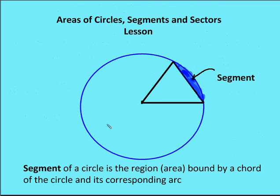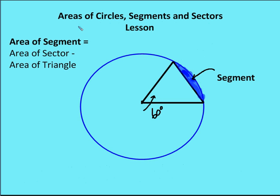A segment is a portion of a circle bound by a chord of the circle and its corresponding arc. Here we have a chord, and then the corresponding arc highlighted. The segment of a circle is the region bound by a chord and its corresponding arc, and we're trying to find this blue area. To find it, we take the area of the sector and subtract the area of the triangle formed by the two radii and the chord. That gives us the area of the segment.